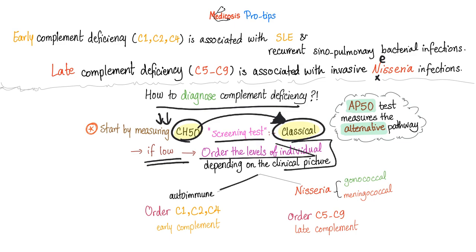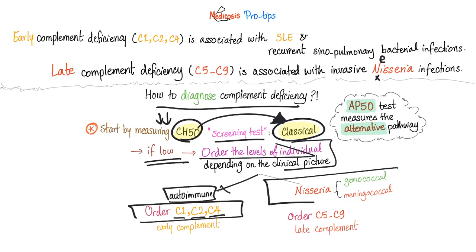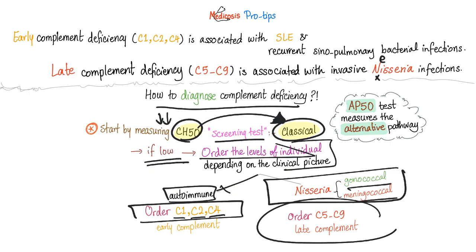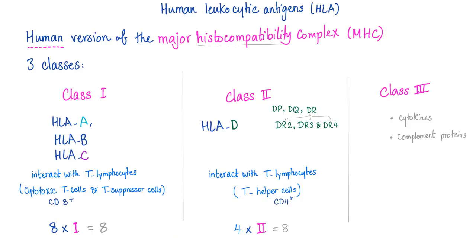If you have a patient and you suspect an autoimmune disease, order the early complement C1, C2, and C4. If you suspect they have Neisseria — gonorrhea or meningitis — order the late complement C5 to C9.